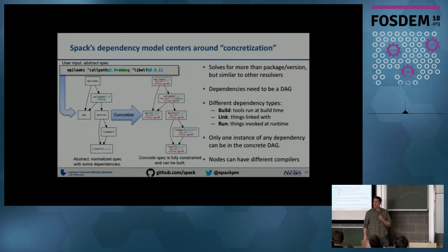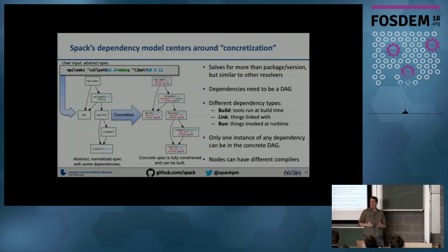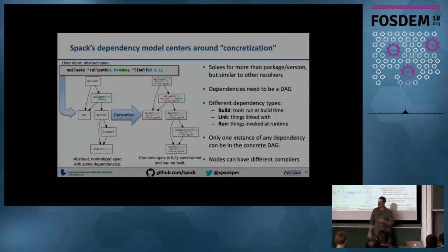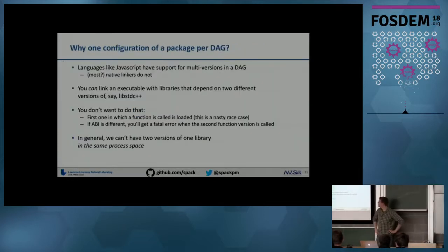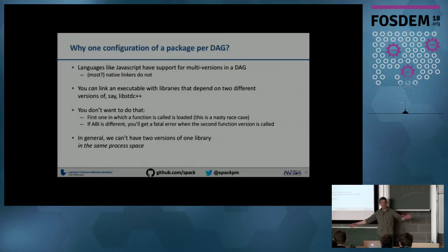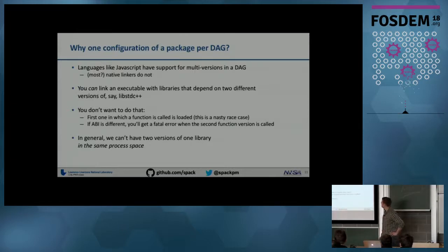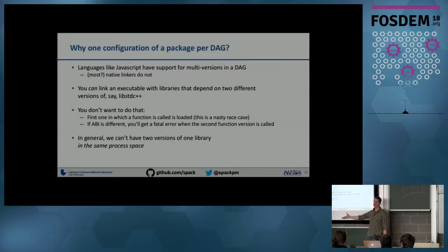We impose a constraint that there should be only one instance of a particular package in a DAG. Languages like JavaScript support multi-version DAGs, but we're dealing with native code and ld.so. You can link an executable where different libraries depend on different versions of something like libstdc++, but you really don't want to — at runtime the first version gets loaded, the second one gets invoked and calls a function in the first version, and if the ABI is incompatible, things explode. This is especially problematic with the recent proliferation of C++ standard versions.